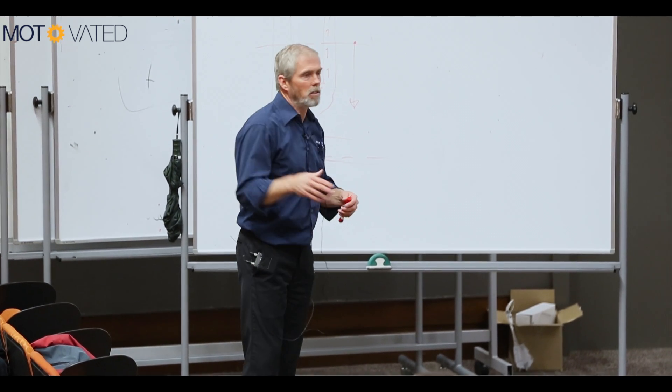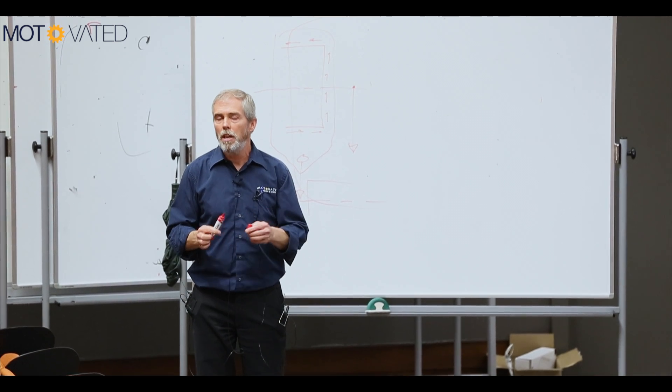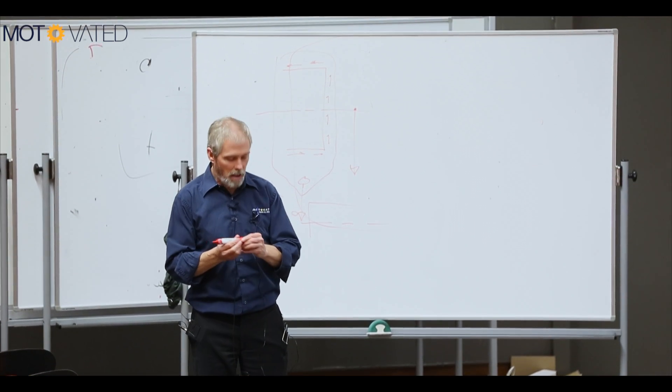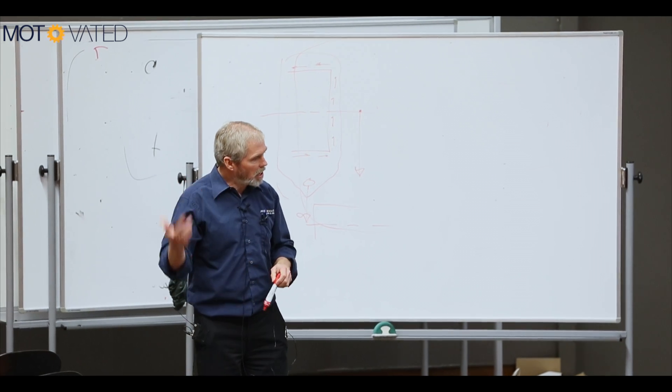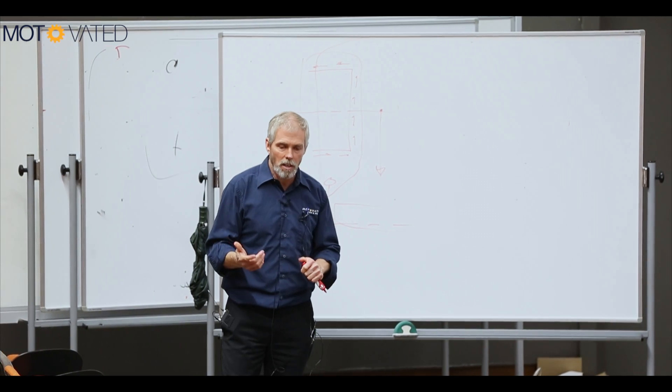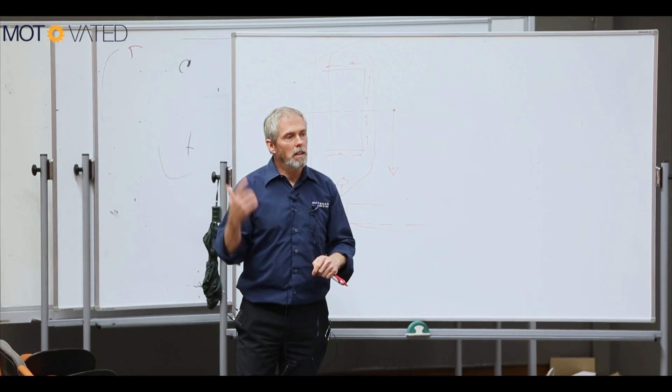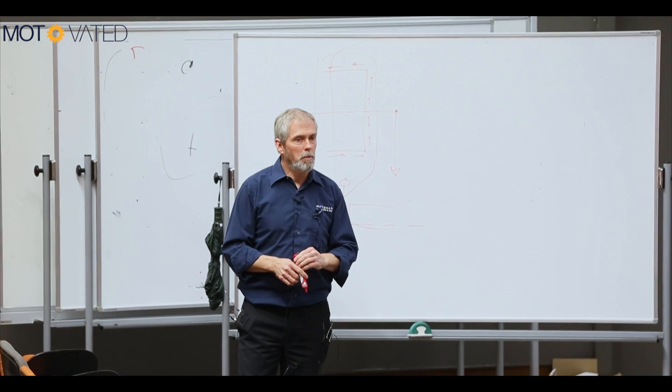So 3-2-1 is a way to allow something to take its own natural shape. And what I do at Motivated and I hammer my engineers, the first thing I want them to do before they do an FE is I want to know what do you think the deflected shape looks like?